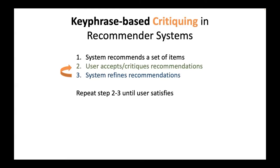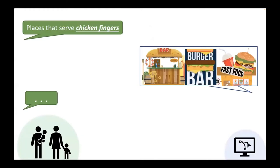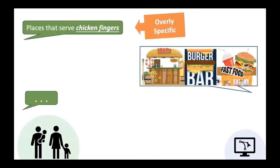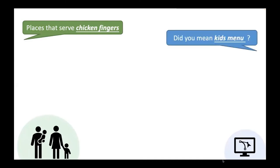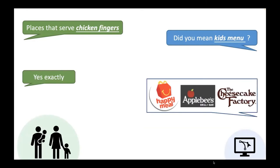As I pointed out, there are problems in the previous example. The user provided noisy feedback that is overly specific, considering that a place with a kids menu is more suitable. So what if instead of providing a refined recommendation list immediately, the system asks a question to clarify the user's intent? For example, 'Did you mean kids menu?' This step helps the system to identify the user's preference scope faster, and the conversational recommendation process can end more efficiently.